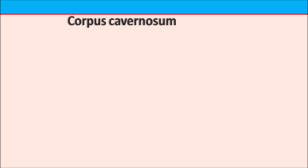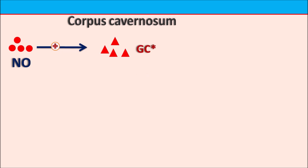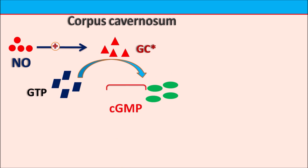Now let us see how sildenafil acts. The site of action of sildenafil is the corpus cavernosum, where nitric oxide is released, which acts as an important mediator for relaxation of smooth muscle. This nitric oxide stimulates another important mediator, the guanylyl cyclase (GC) system. When GC is activated, it converts GTP into cyclic GMP, which is the important secondary messenger responsible for smooth muscle relaxation.